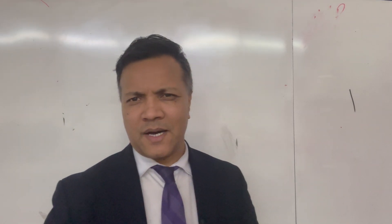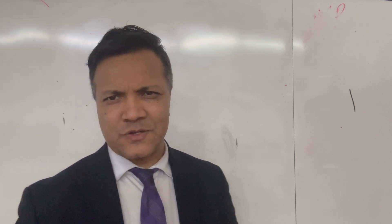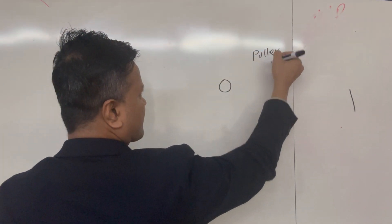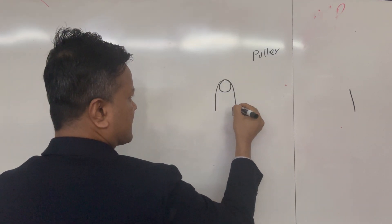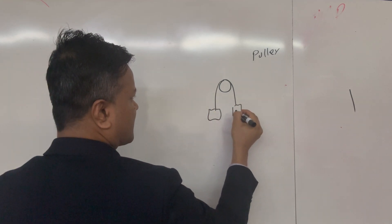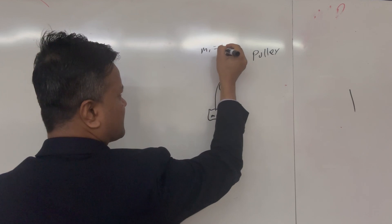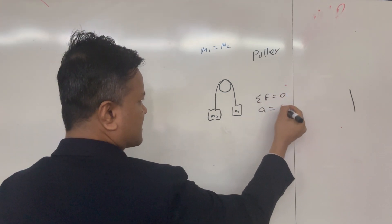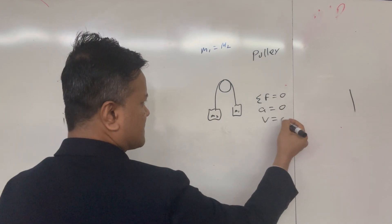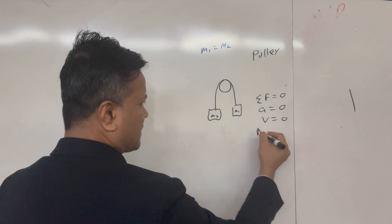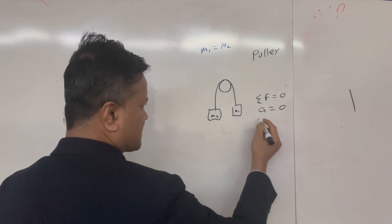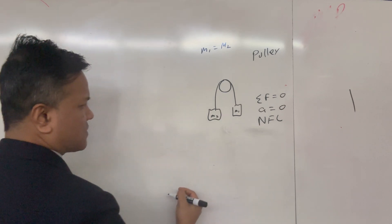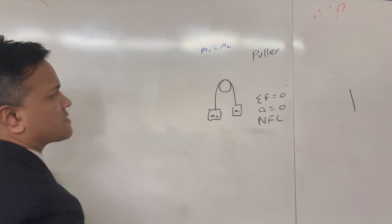The force exerted by a rope is the tension force. Let's start with a simple pulley. In this case you have M1 and M2. If M1 is equal to M2, then net force would be zero. If net force is zero, acceleration is zero. If acceleration is zero, then velocity is zero — this is Newton's first law. The change in momentum is also zero; everything is zero in this case.